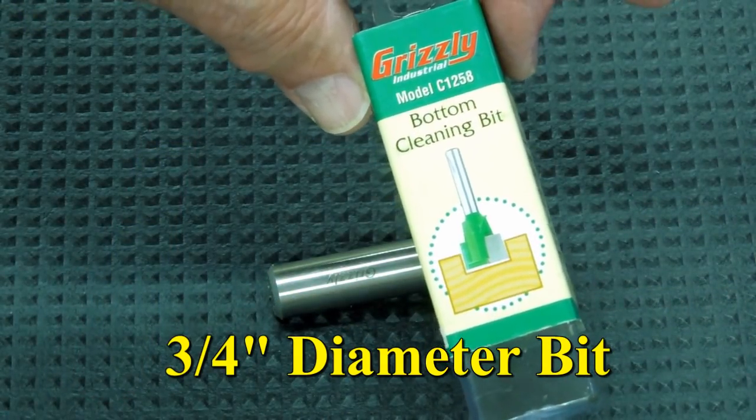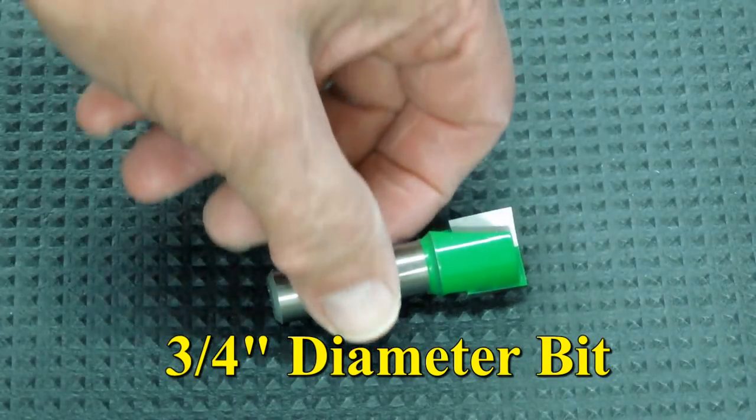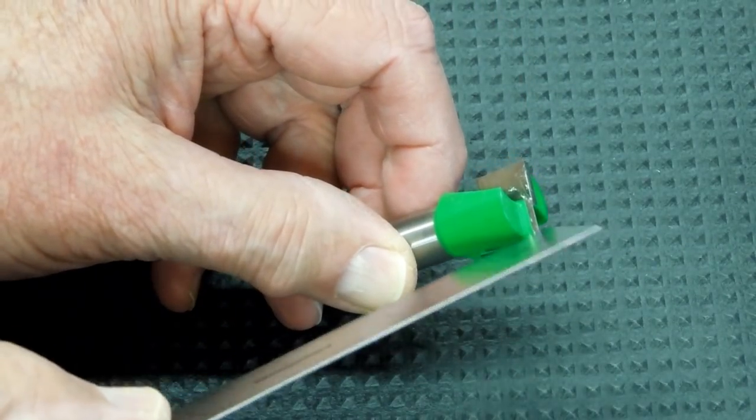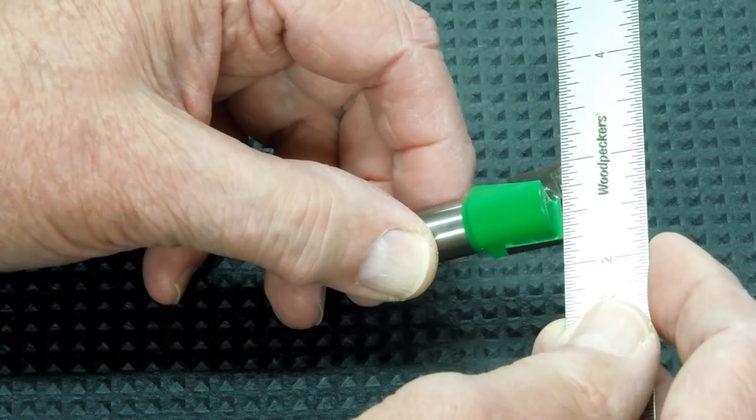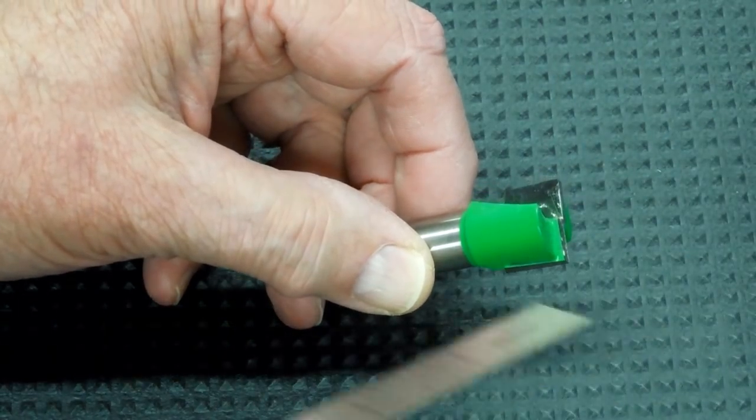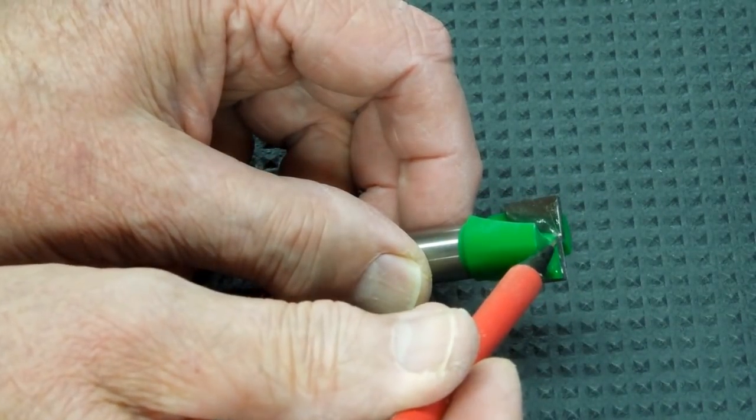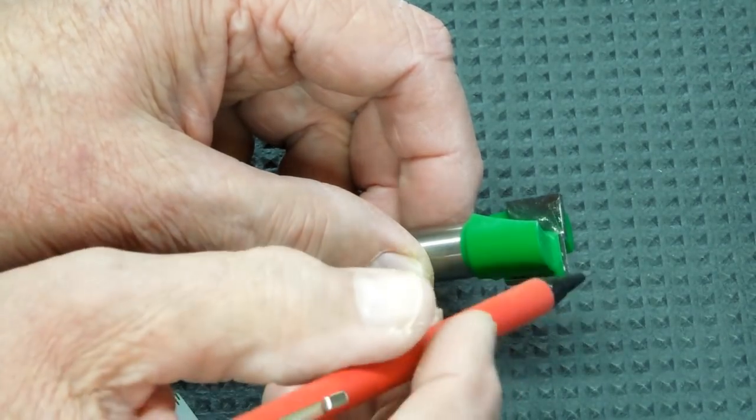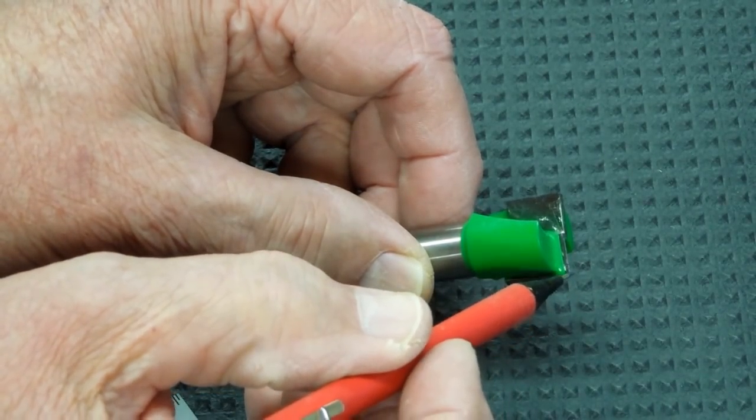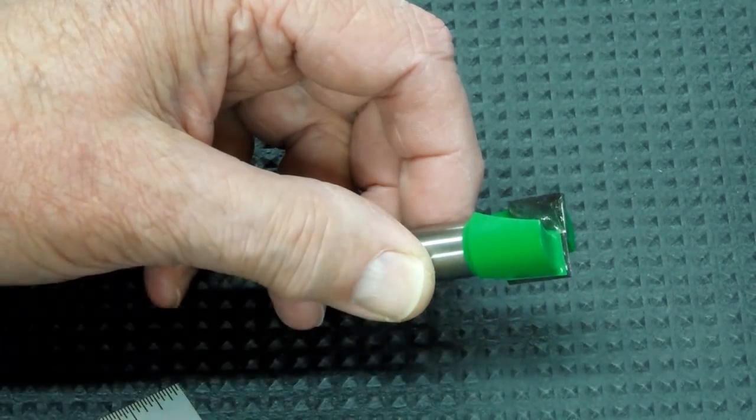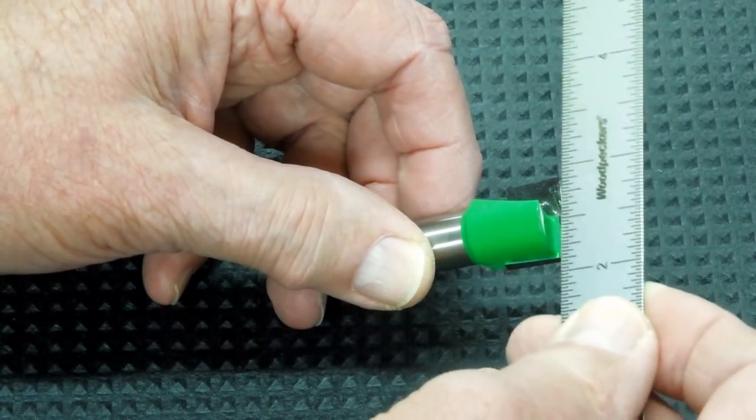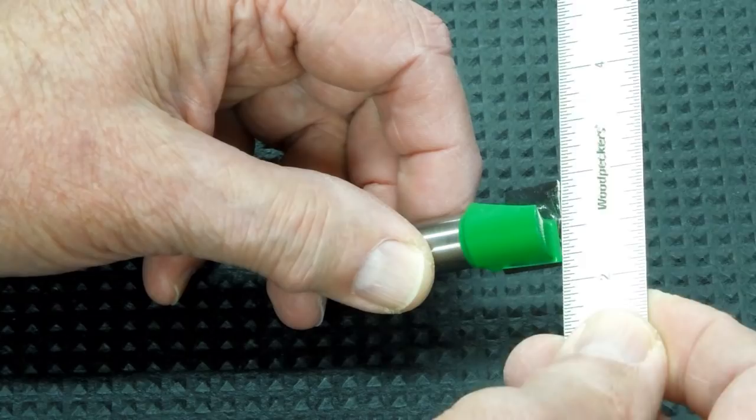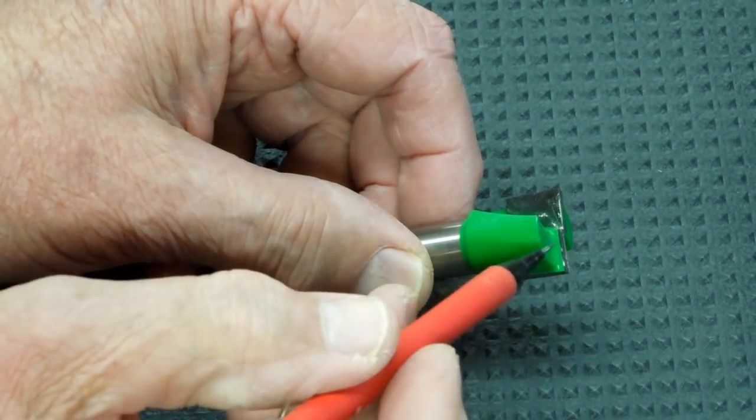This is what's called a bottom cleaning bit. If you look at this and put a ruler across that edge, it's not completely flat. This is somewhat depressed from this outside edge. So when this contacts the wood, this outside edge is the first part that hits, and that's fine for the purpose of this bit. Even mill cutters are ground in the same fashion.